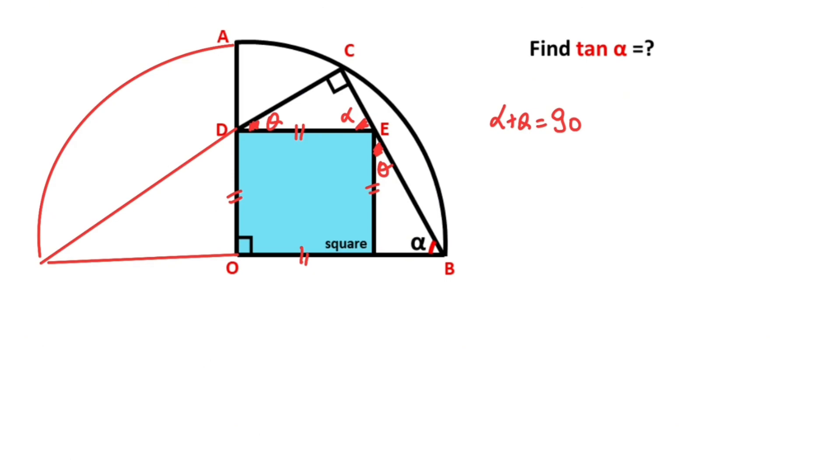So here must be equal to alpha, and theta is left here. I want to represent one side of the square with x, so these are also x.